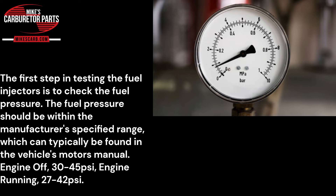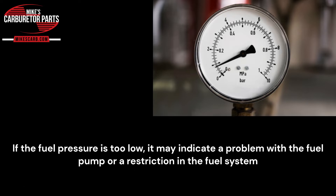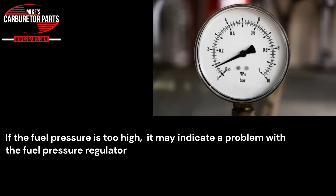The first step in testing the fuel injectors is to check the fuel pressure. Fuel pressure should be within the manufacturer's specified range, which can typically be found in the vehicle's service manual. Engine off: 30 to 45 psi; engine running: 27 to 42 psi. If the pressure is too low, it may indicate a problem with the fuel pump or a restriction in the fuel system, for example a kink in the fuel line. If the pressure is too high, it may indicate a problem with the fuel pressure regulator.